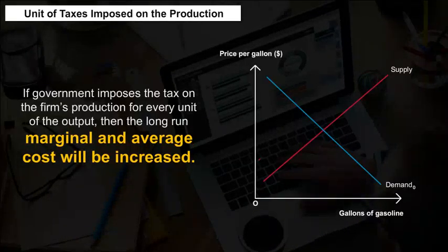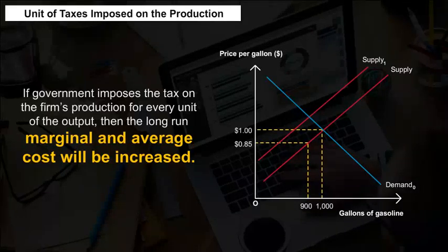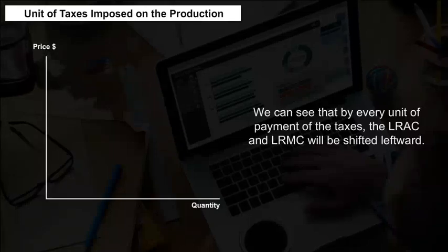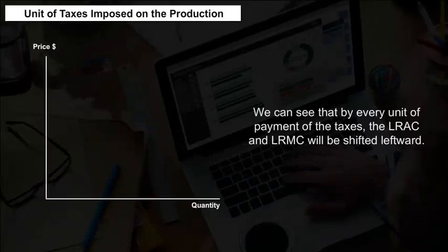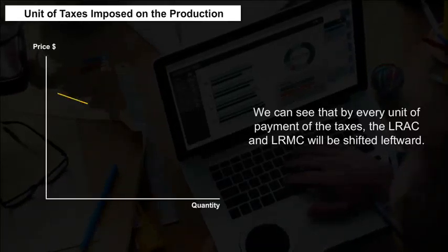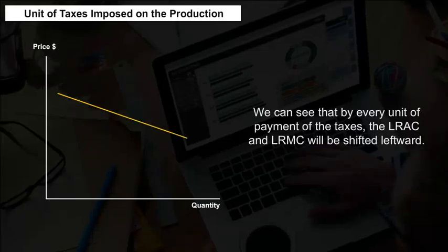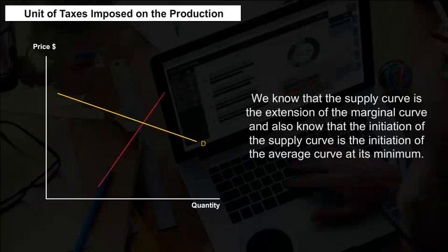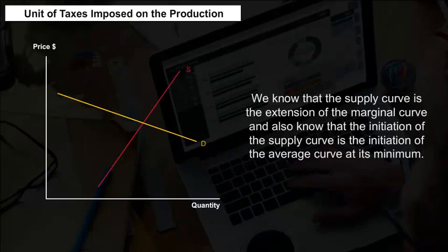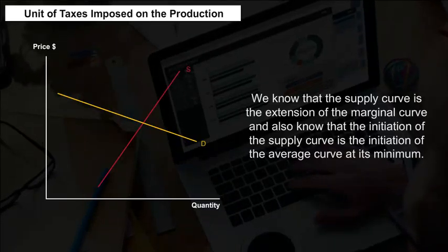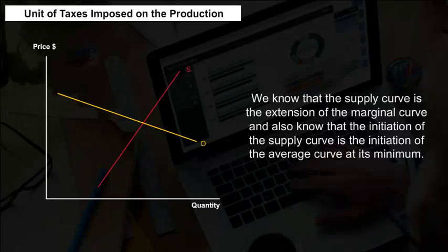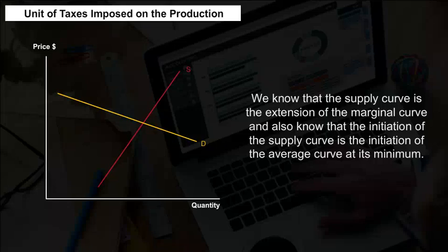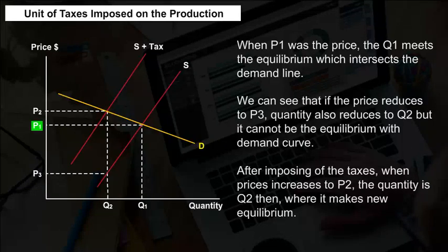Unit Taxes Imposed on Production. If the government imposes a tax on the firm's production for every unit of output, the long-run marginal and average cost will increase. By every unit of tax payment, the LRAC and LRMC will shift leftward. The supply curve is the extension of the marginal curve, and the initiation of the supply curve is at the minimum of the average curve.